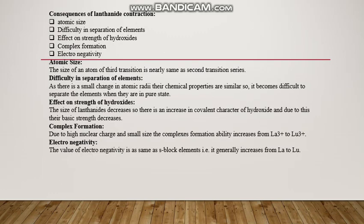What are the consequences of lanthanide contraction? First, atomic size: the atomic size of the third transition series is nearly the same as the second transition series. Second, difficulty in separation of elements, as atomic radii are almost the same. Third, effect on strength of hydroxides: as we move left to right, decreasing atomic size increases the covalent character in hydroxides. Fourth, complex formation: due to high nuclear charge and small size, complex formation ability increases from left to right. Fifth, electronegativity increases from lanthanum to lutetium.